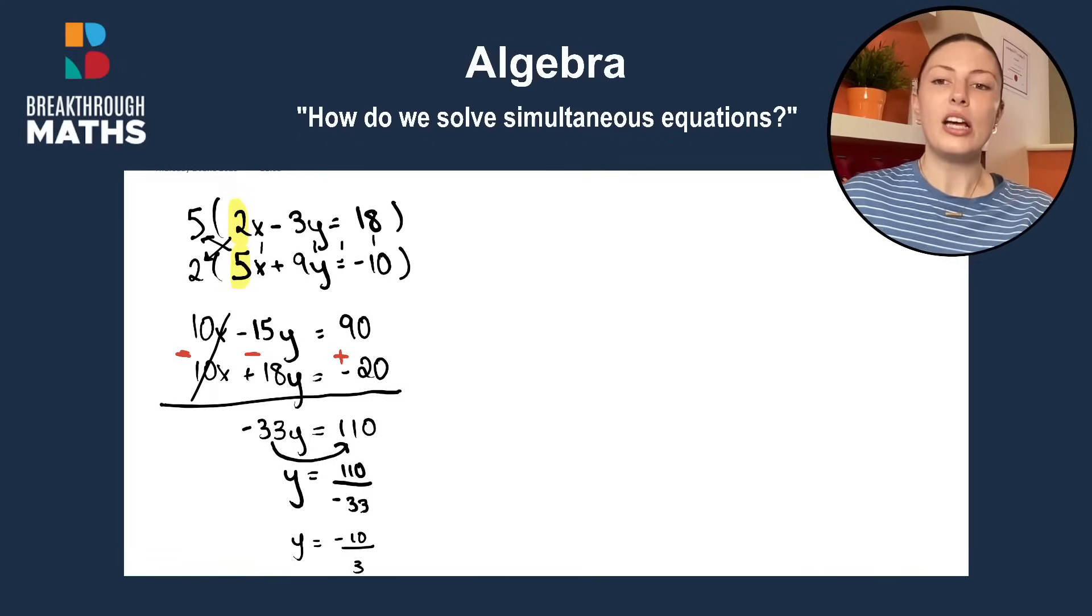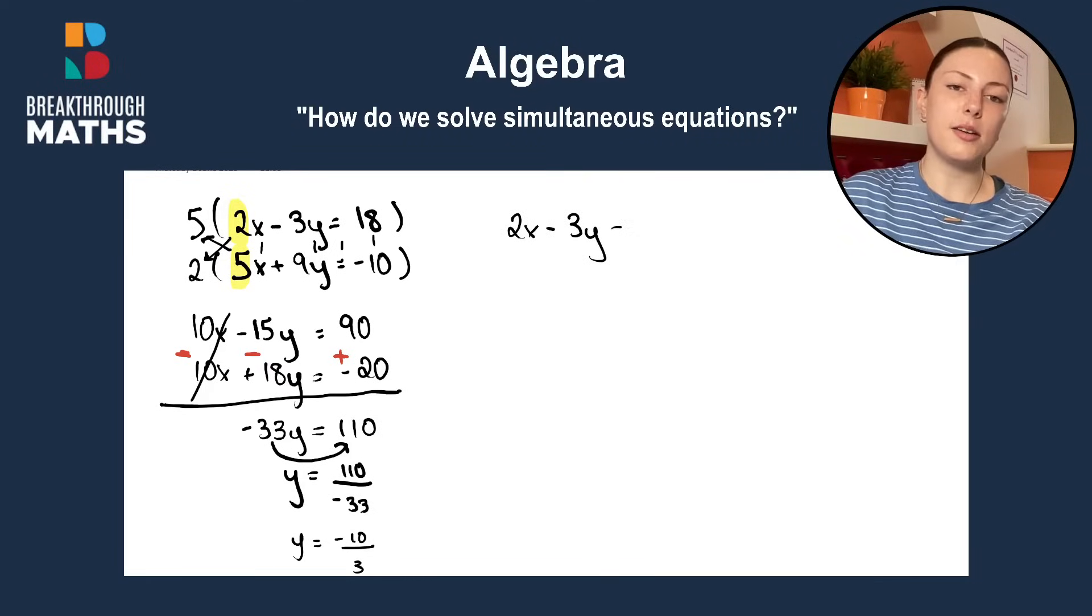Okay, now we need to solve for x. So, we can go back up and pick any of our equations that we started with. I'll pick 2x minus 3y is equal to 18. And now we sub in the value that we found for y.